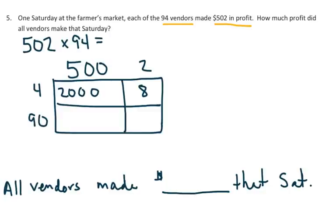And 90 times 500, 45,000. And this is 180. You're going to add these.